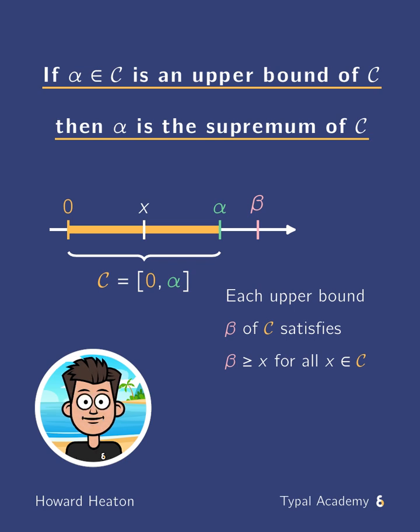Now, in particular, since we know that alpha is in C, if beta is an upper bound, then we know that beta is greater than or equal to alpha.